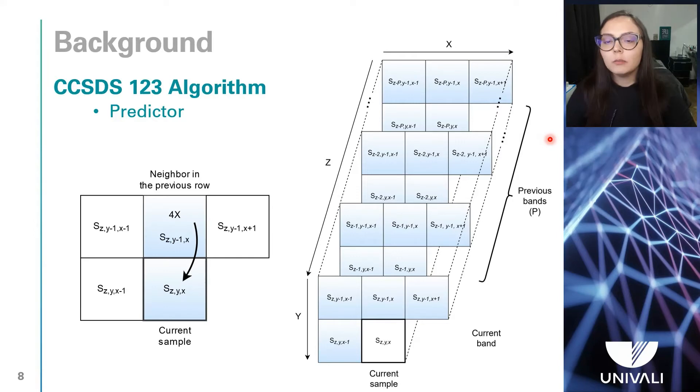Then, the local sum and the locally weighted difference is used to calculate the scalar predicted sample, which is 2 times the predicted value.